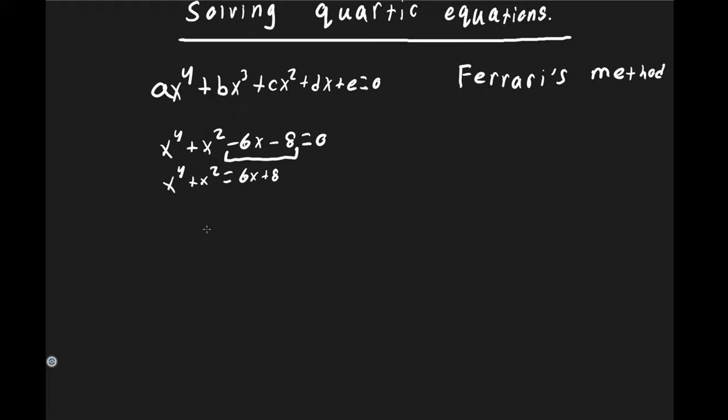Now what Ferrari did was add x² + 1 to both sides — here p = 1, so we add 1·x² + 1. This gives us x⁴ + 2x² + 1 = x² + 6x + 9, maintaining equality on both sides.